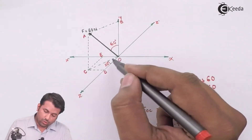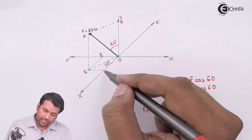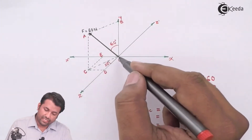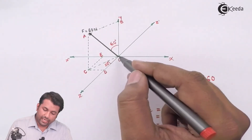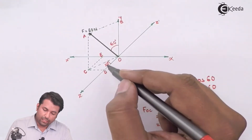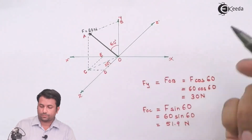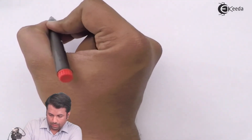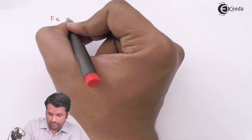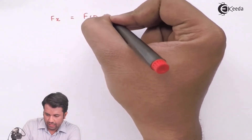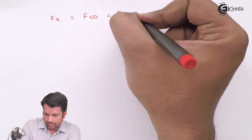Now in triangle OCD, if I find the length CD, that becomes the x-component of the force, and if I find OD, I can find the z-component. CD is the sine component and OD is the cosine component in this triangle. So I'll write: F_x = F_CD.